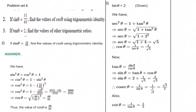Simplify: 11 upon 61 whole squared is 121 upon 3721. So cos square theta equals 3721 minus 121 upon 3721, which is 3600 upon 3721. Taking square root of both sides, we get cos theta equals 60 upon 61.